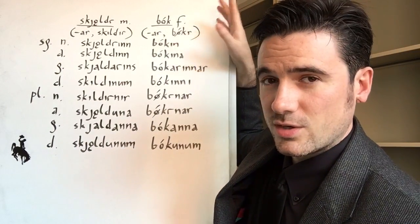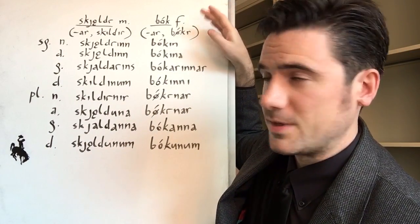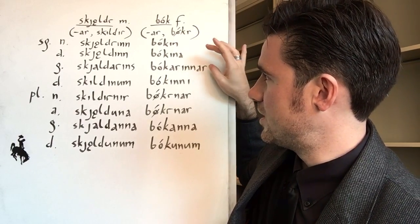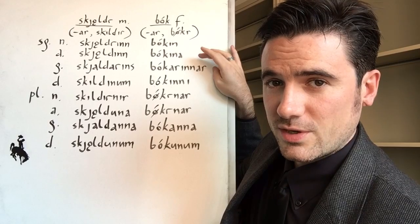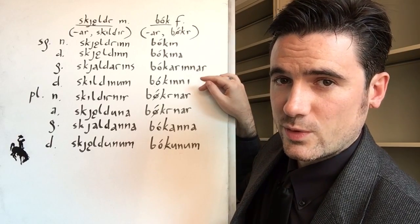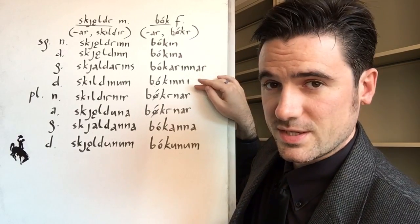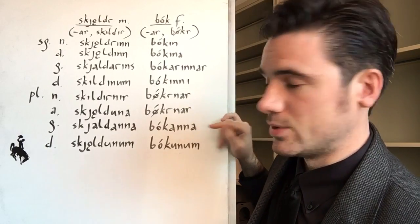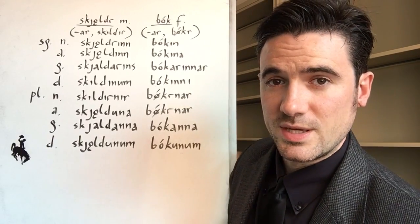In the feminine, again, articles look the same no matter the class of feminine noun. So IN, INA, INAR, INI. We carry the vowel from the definite article into each one of these forms because each of those forms ends in a consonant. Then BŒKRNAR, BŒKRNAR, BÓKANNA, BÓKUNUM, like we'd expect with any feminine noun.